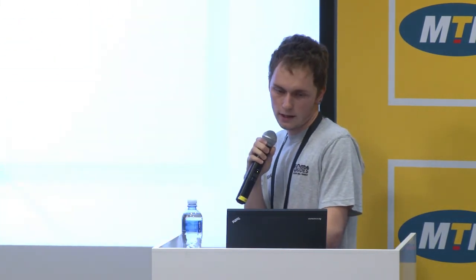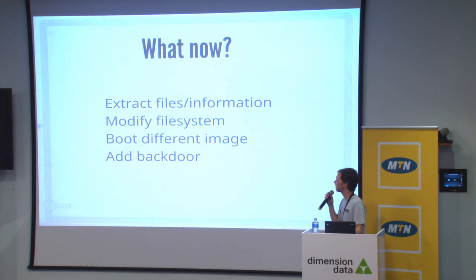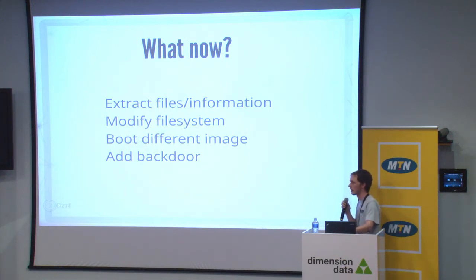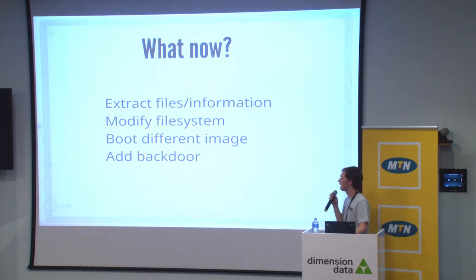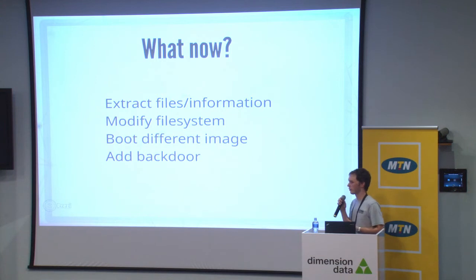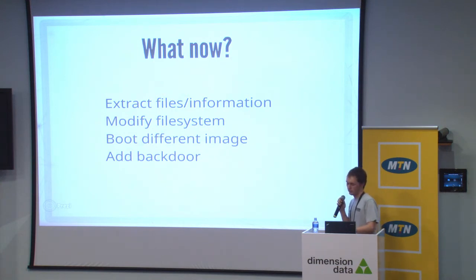There was nothing on the network that allowed me to get into the camera — assuming there were no credentials, there wasn't really any way in — but using some hardware techniques I was able to get the password and access the device. Once you have the firmware, you can extract files or information. The firmware image contains the Linux filesystem but can also contain user data like Wi-Fi passwords and other interesting information, depending on the device. You can also modify the file system, add binaries, and replace BusyBox with something else.